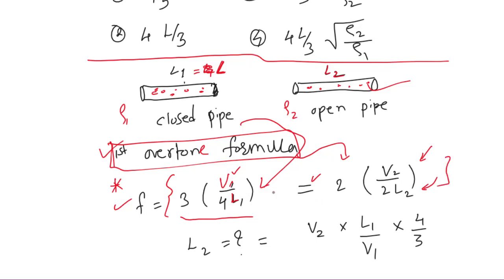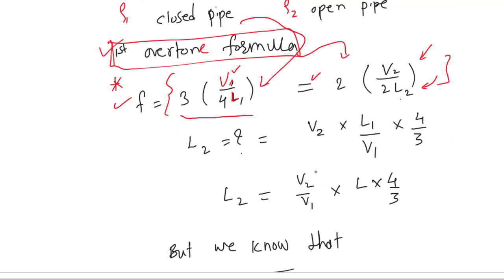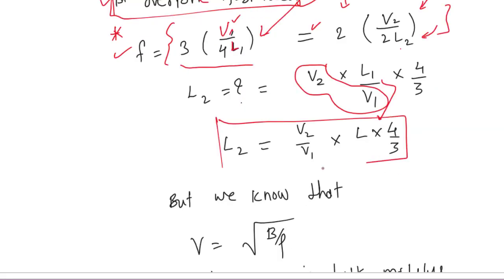Now we can easily calculate L₂. L₂ is equal to—if we rearrange these terms it will be V₂ times L₁ divided by V₁ times 4 divided by 3. So L₂ equals V₂ divided by V₁ times L times 4 divided by 3, because L₁ and L are same. This is L₂, but now we have to get rid of V₂ by V₁.